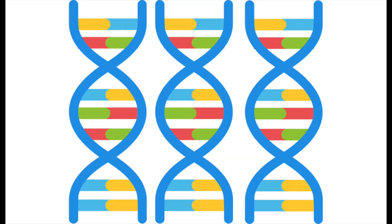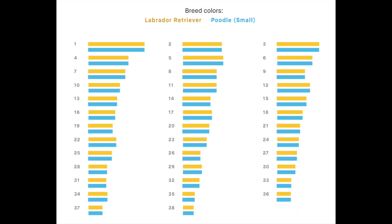It turns out that at the heart of the magic of inheritance is a molecule called DNA. In animals, DNA is organized into chromosomes. You might know that humans have 23 pairs of chromosomes, but did you know that dogs have 39?